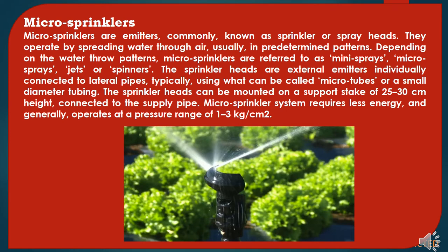Micro-sprinklers are emitters, commonly known as sprinklers or spray heads, that operate by spreading water through air usually in predetermined patterns. Depending on the water throw patterns, micro-sprinklers are referred to as mini sprays, micro sprays, jets, or spinners. The sprinkler heads are external emitters individually connected to lateral pipes, typically using micro tubes or small-diameter tubing. They can be mounted on a support stack of 25 to 30 cm height from the soil surface, connected to the supply pipe. Micro-sprinkler systems require less energy and generally operate at a pressure range of 1 to 3 kg per square centimeter.